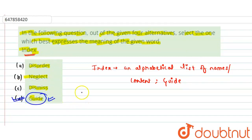But let's check out the other options. So in option A we have the word disorder. Disorder means a state of confusion.